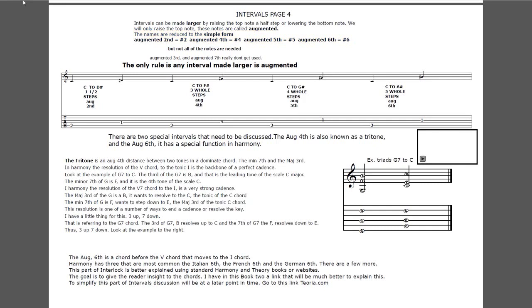The augmented sixth is exactly the same as a minor seventh - a little way that modern composers, especially of the classical eras, skirted the rules to resolve chords. We have French, German, and Italian sixth, which refer to the augmented sixth. Not all of the notes are used - the augmented third and augmented seventh do actually exist; they just don't get used. The only rule: any interval made larger is augmented. C to D-sharp, one and a half steps, is an augmented second - same as a minor third. C to F-sharp, three whole steps, is an augmented fourth, enharmonic with a diminished fifth. C to G-sharp, four whole steps, is an augmented fifth, enharmonic to a minor sixth. C to A-sharp, five whole steps, is an augmented sixth, the same as a minor seventh.